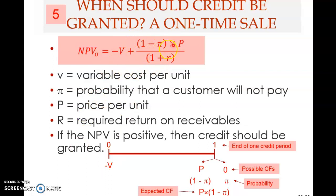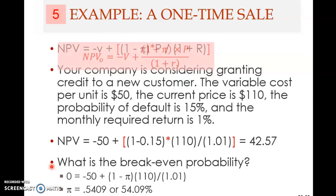So if the present value of the inflow is greater than the cash outflow, then the NPV becomes positive. But if it is less than the outflow, then it becomes negative. So if it is positive, credit should be granted. If it is negative, you should not give credit to the customer — but you can still sell on a cash basis.